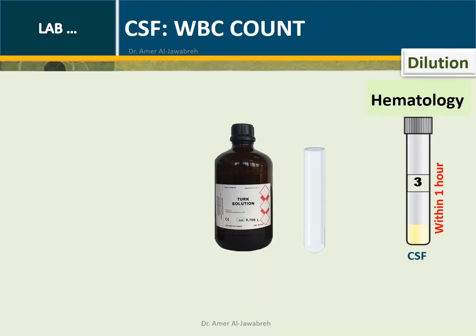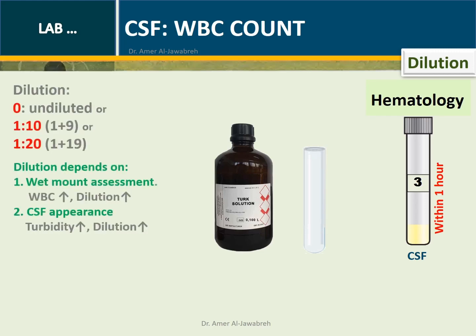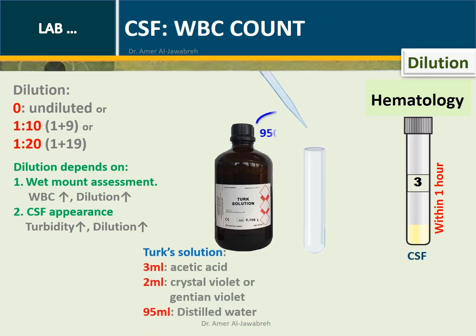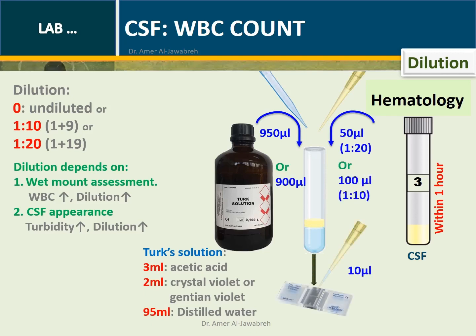CSF WBC Count — Dilution: CSF can be counted undiluted, or at 1:10 or 1:20 dilution. Dilution depends on the wet mount assessment — the higher the white blood cells, the higher the dilution — or on CSF appearance — the higher the turbidity, the higher the dilution. In a clean test tube, mix the appropriate amounts of Turk solution and CSF according to the dilution shown, mix well, and load into the chamber.